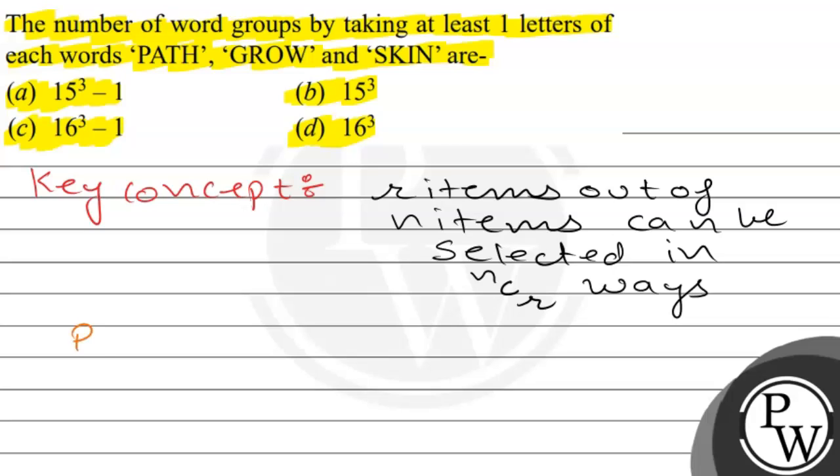First, let's talk about word PATH. Now, the number of ways we can select letters is 4C1.